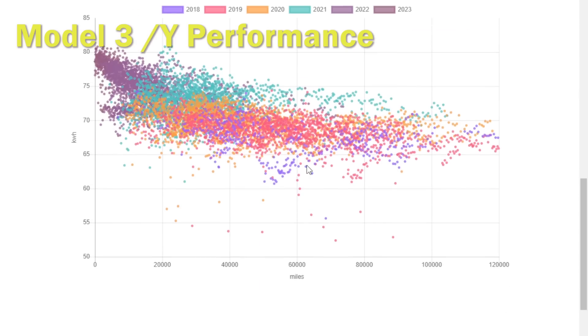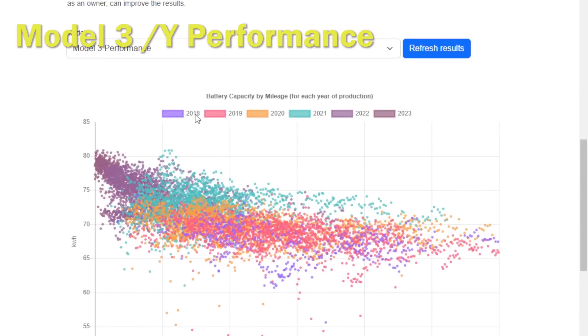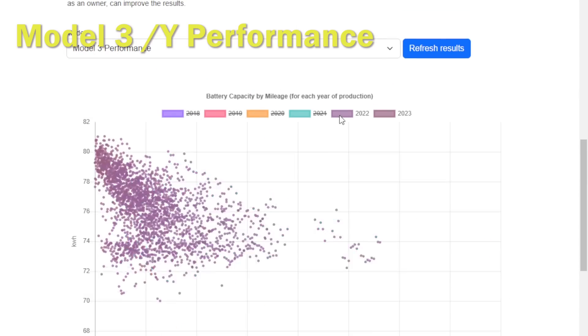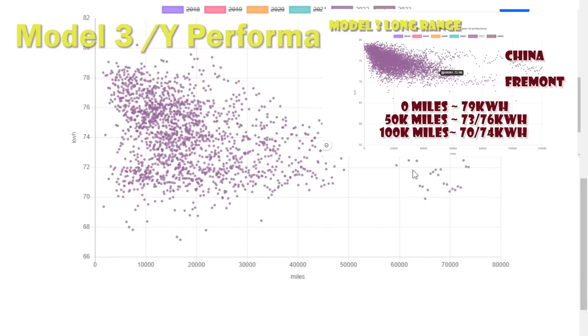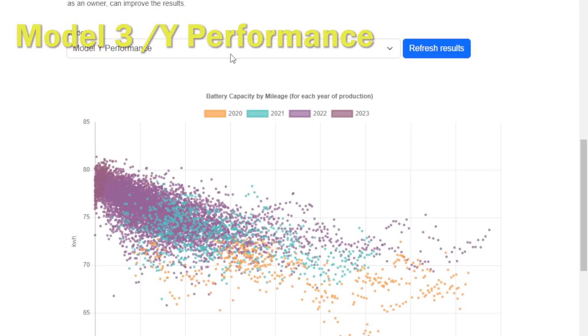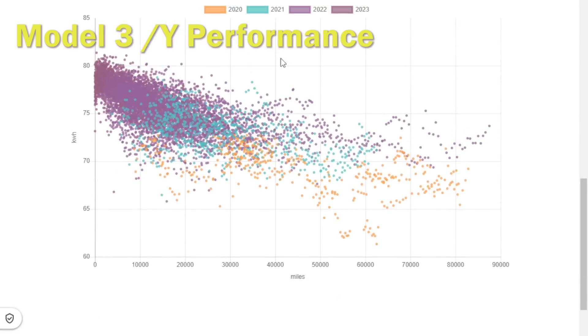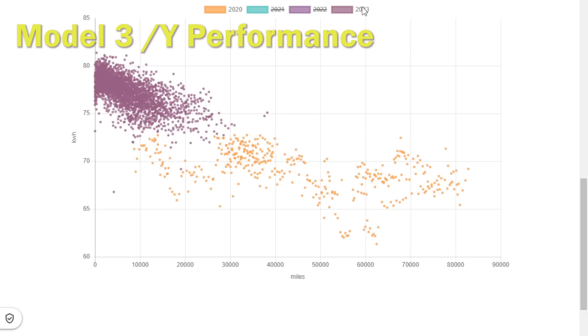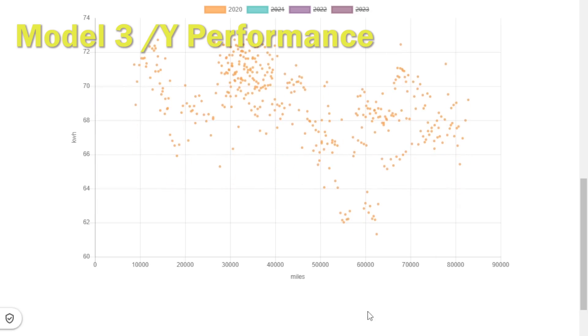We've also gone and had a look at the performance models and we've actually got the three and wide performance models here. When you actually filter down and have a look at the individual year, we're seeing a massive spread in the capacity of these batteries. We've put the long range in the top right hand corner to sort of compare, and it's really hard to draw any conclusions. There's a 6-7 kilowatt hour spread between one car and another. If you go back to the 2020 values which we're seeing here, some are down as low as 62 kilowatt hours, some are still up at 72 kilowatt hours—that's a 10 kilowatt hour spread.